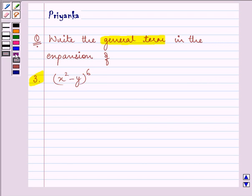Now we must know first of all how do we write the general term of r plus 1th term. That is nCr a raised to the power n minus r, b raised to the power r.